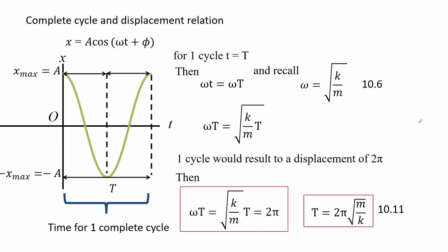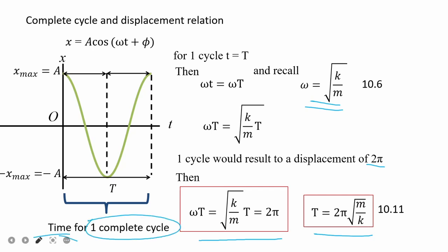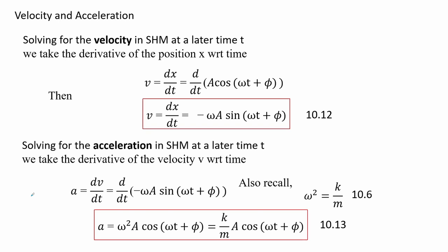We see the graphical representation of displacement X as a function of cosine. One complete cycle is one rotation, shown in wave form. One complete period starts and ends at the same point. For one complete cycle the displacement spans 2π. Recalling the angular frequency equation, angular frequency times one period equals 2π, which is the distance for one rotation. This gives us the period function: T equals 2π times the square root of M over K. For velocity and acceleration, we take the first derivative of the displacement cosine function to get velocity, and the second derivative to get acceleration, expressing it in terms of K and M.